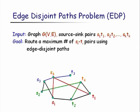In this graph I'm routing the pair S1T1 along the red path, S2T2 along the green path, and S3T3 along the blue path. Once I've routed these pairs, if you look at the pair S4T4, there is no way to assign a path to this pair without violating the edge-disjoint property. Any path connecting S4 to T4 would intersect with one of the previously assigned paths. This is an extremely well-studied problem.